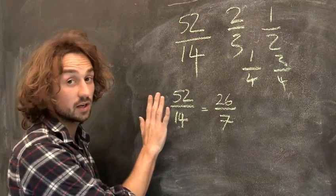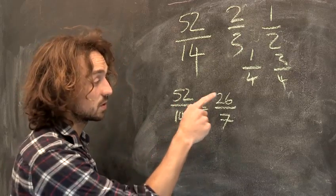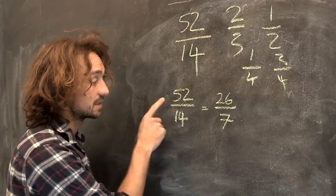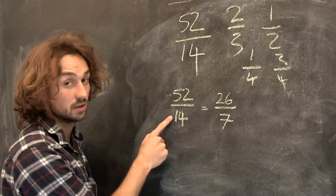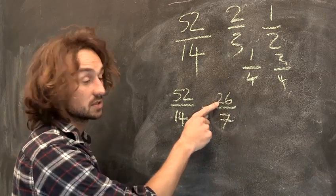So this fraction here, all I've done is divide the top by 2 and the bottom by 2, and I've changed nothing. But 26 over 7 is exactly the same as 52 over 14. Now, when I get to this stage, I look for a number that goes into this and goes into this.